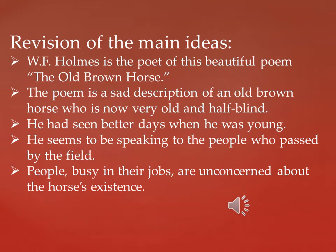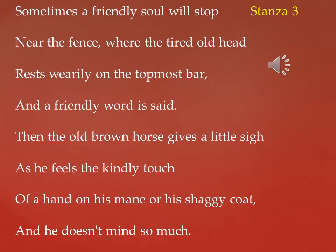Revision of the main ideas: WF Holmes is the poet of this beautiful poem 'The Old Brown Horse.' The poem is a sad description of an old brown horse who is now very old and half blind. He had seen better days when he was young. He seems to be speaking to the people who pass by the field. People busy in their jobs are concerned about the horse's existence. Now let's start the third stanza.